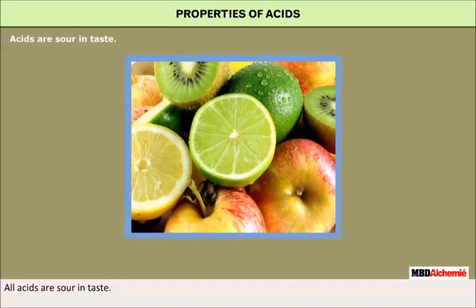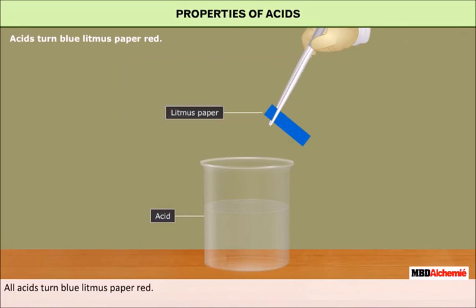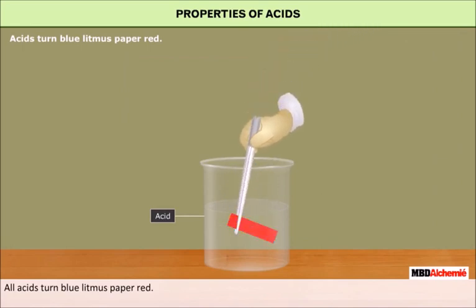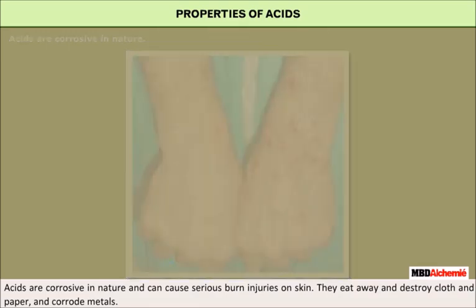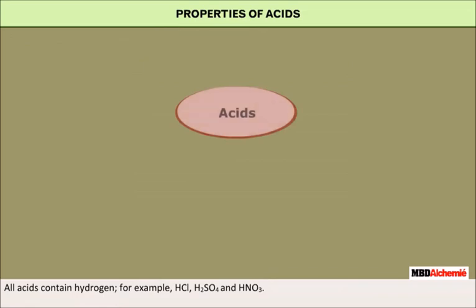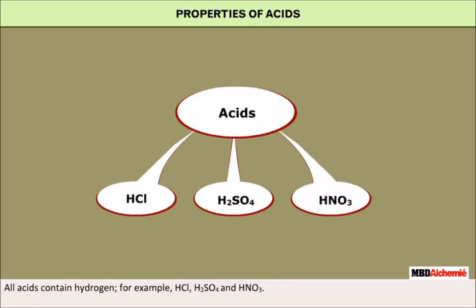Properties of Acids. All acids are sour in taste. All acids turn blue litmus paper red. Acids are corrosive in nature and can cause serious burn injuries on skin. All acids contain hydrogen — for example, HCl, H2SO4, and HNO3.